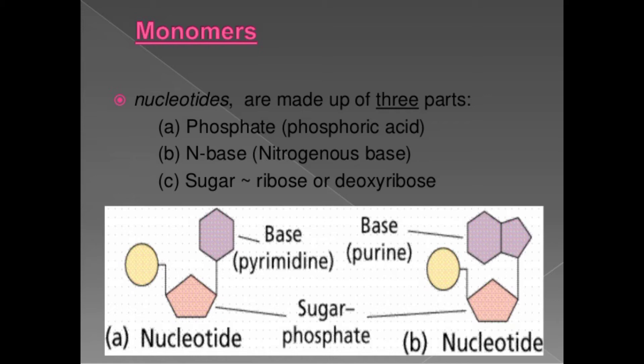The nitrogenous base component is of two types: pyrimidine and purine. Examples include thymine, adenine, guanine, and cytosine. Adenine, guanine, and cytosine are present in both DNA and RNA. The key difference is that thymine is present in DNA and uracil is present in RNA. In nucleotides, the sugar and phosphate are common to both strands, while the nitrogenous base differs.